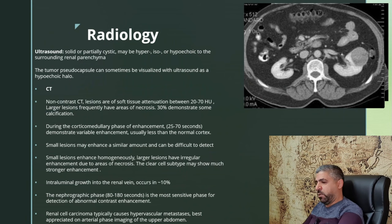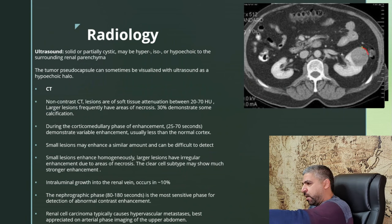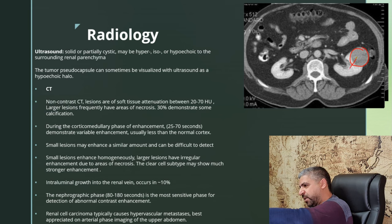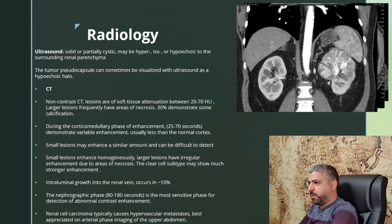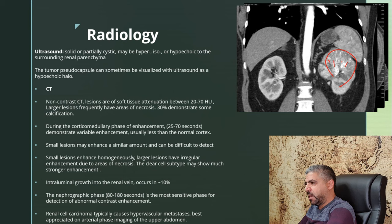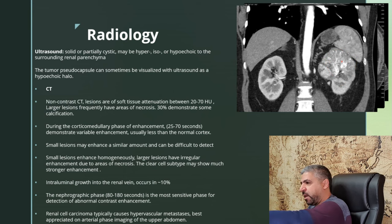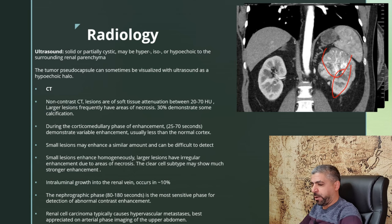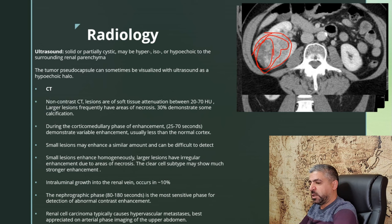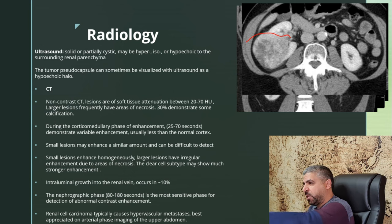Looking at these CT scan examples: in the corticomedullary phase, the lesion enhances but less than the adjacent renal parenchyma. In another example, the lesion shows areas of calcification and again enhances less than the surrounding parenchyma. In a larger case, the lesion shows vivid heterogeneous post-contrast enhancement with areas of necrosis due to the large size, with extension into the renal pelvis and collecting system.